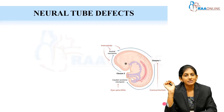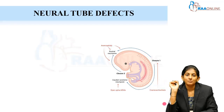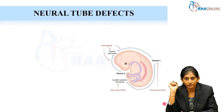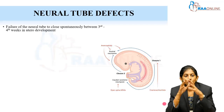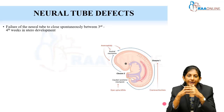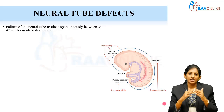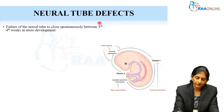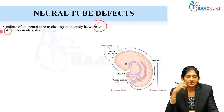Let us get started. First I will start with the most common congenital anomaly of the CNS, which is the neural tube defect. What happens in a neural tube defect is that the neural tube antenatally fails to close. This closure normally occurs between the third to fourth week of gestation, and if it does not happen, it can cause neural tube defects.